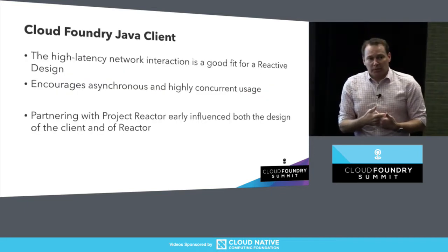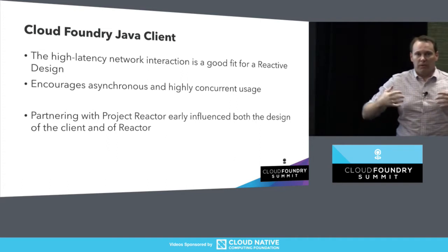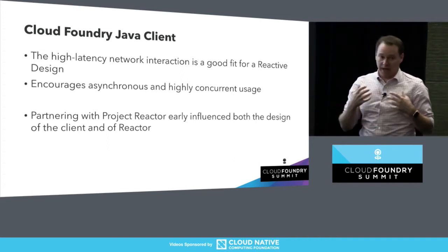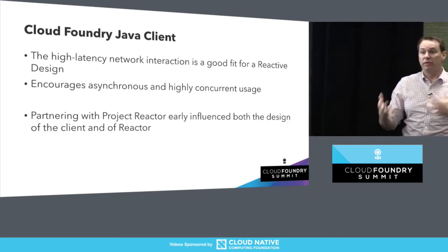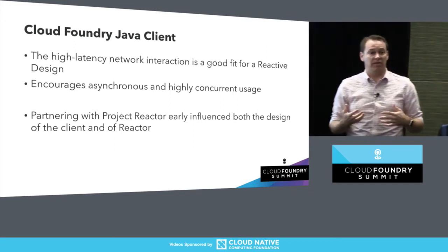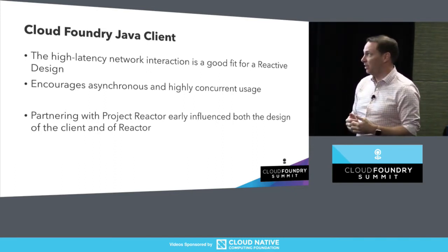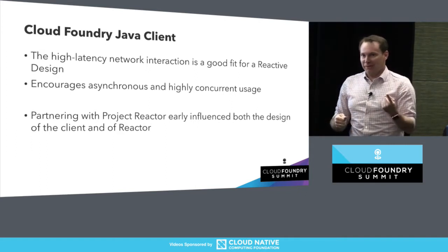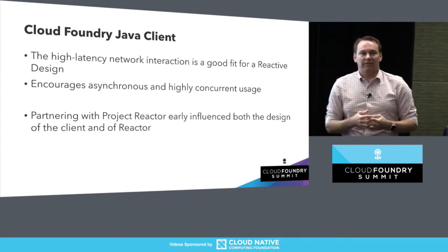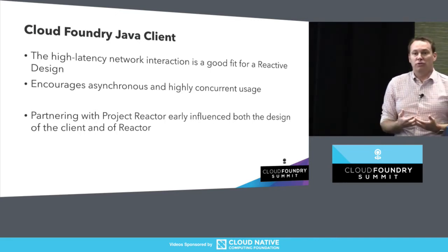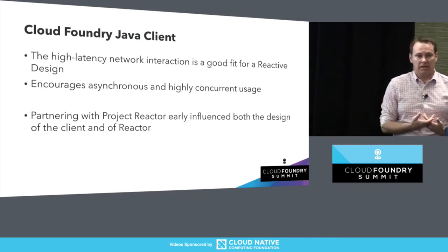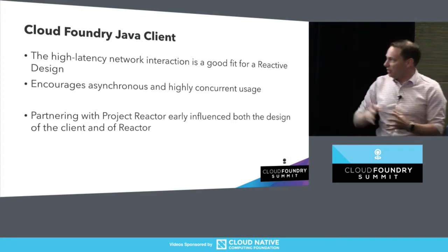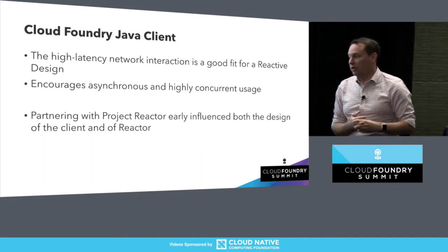We knew we wanted to write a language binding, but we were still figuring out what that API needed to look like. It turned out that high-latency network interaction is a really good fit for reactive design. If you go over a network, you really want to use reactive programming because it allows you to write asynchronous, non-blocking operations simply. So we partnered with something from the Spring team called Project Reactor early on — we drove their design and they drove ours.